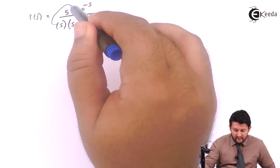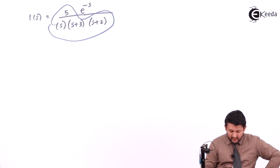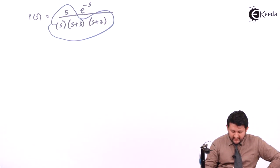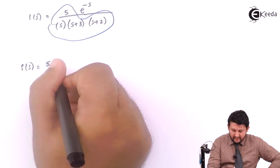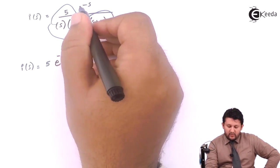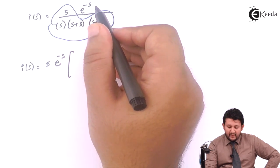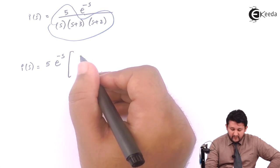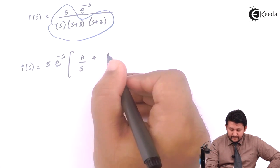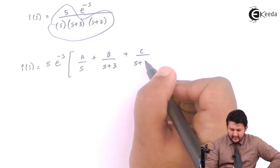So now apply partial for this equation. So you get phi upon this, phi upon S upon and so on. So when you get this Laplace, after getting A, B and C, my dear friends, you get I of S equal to phi e raise to minus S. I am applying a partial definition to 1 upon S into S plus 3 into S plus 2, so the value for A upon S, B upon S plus 3 plus C upon S plus 2.